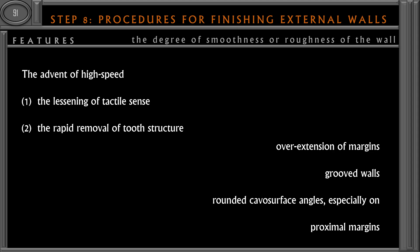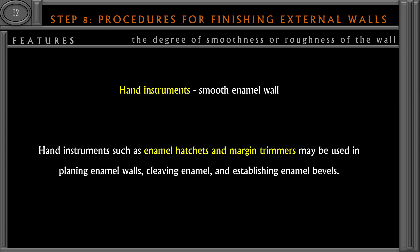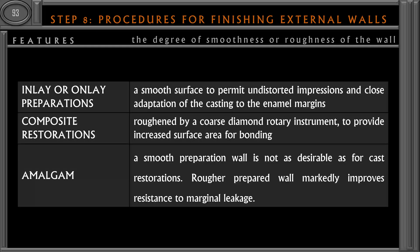The second consideration is the degree of smoothness or roughness of the external wall. Using a high-speed aerotor reduces tactile sensation and causes rapid removal of tooth structure, which can lead to over-extension of margins, grooved walls, and rounded cavo-surface angles especially in proximal margins. It is better to use hand instruments like enamel hatchets and marginal trimmers to cleave sharp enamel margins and establish proper enamel walls.